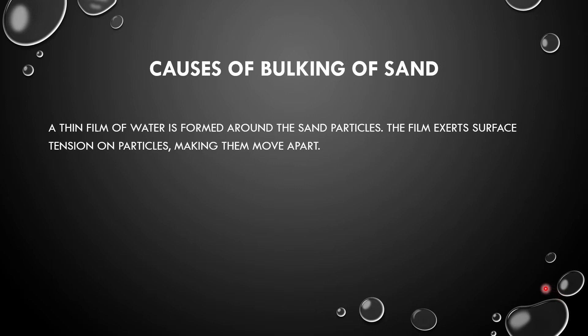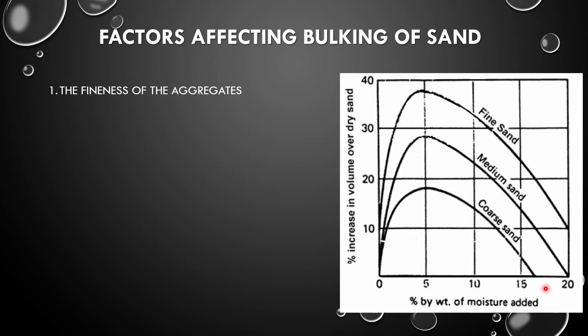Factors affecting bulking of sand: there are two major factors which affect the bulking of sand. Number one is fineness of aggregates, and number two is percentage of moisture content.